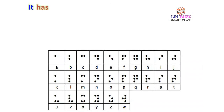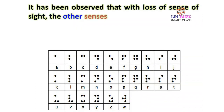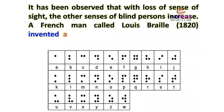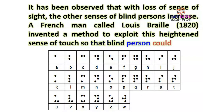It has been observed that with the loss of sense of sight, the other senses of blind persons increase. A Frenchman called Louis Braille invented methods to exploit this heightened sense of touch so that blind persons could read.